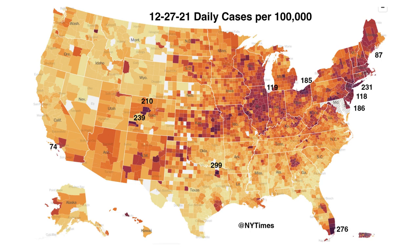This map, generated by the New York Times on December 27th, shows the number of daily new cases per 100,000 population. As you can see, the Northeast has been heavily impacted by the Omicron variant. As will be discussed in Module 3 in the Vaccine Section, routine two-shot vaccinations afford only a low level of protection from the variant — 33% efficacy for Omicron. N95 masks and a booster, or third shot, are now being recommended to control the infection.